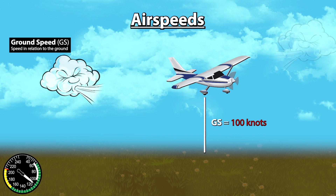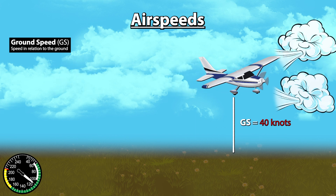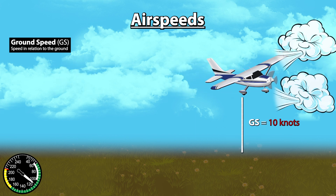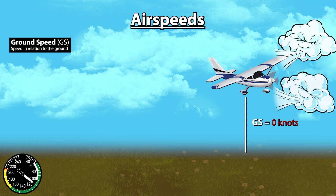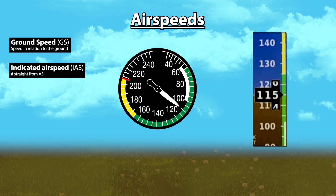You might have seen some of those videos of planes flying into such a strong headwind that their ground speed is essentially zero, and they are just hovering in place. Indicated airspeed is simply the number you read straight from your airspeed indicator. That's really all there is to it.